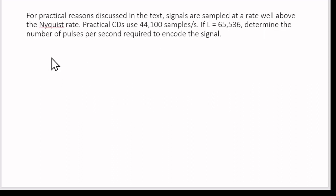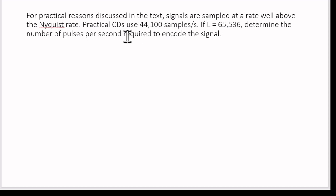Now for Part D: for practical reasons, signals are sampled at a rate well above the Nyquist rate. Practical CDs use 44,100 samples per second instead of the Nyquist rate of 30,000 samples per second. With L still equal to 65536, we again need to determine the number of pulses per second — bits per second — required to encode the signal.